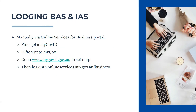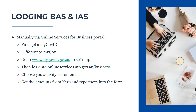To recap: after logging in to the portal, choose your activity statement, get the amounts from Xero for each label, type them into the form, and hit Submit. Just like when lodging directly through Xero, don't forget to actually pay the ATO — this step does not process the payment. Make sure you go ahead and pay what you owe for your activity statement.